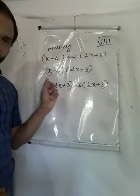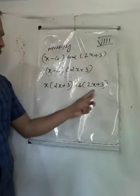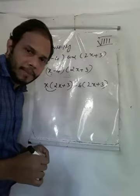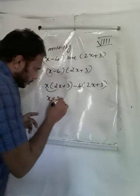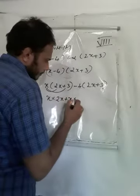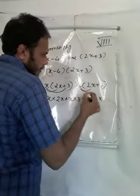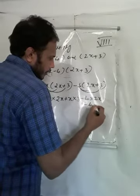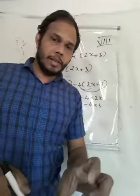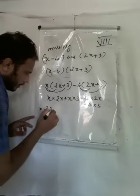The minus sign comes from minus 4, so minus 4 into (2x plus 3). Now: x into 2x, plus x into 3, minus 4 into 2x, minus 4 into 3. You need to multiply each term with every term.